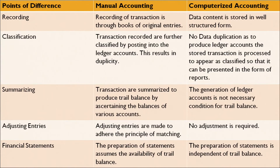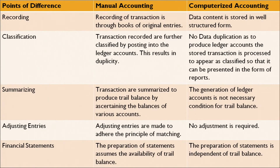Let's now compare how manual records were maintained versus how data is maintained through a computer-aided system. Recording: in the manual process, transactions are recorded through books of original entries; in the computer system, data content is stored in a well-structured form. Classification: in manual accounting, transactions are further classified by posting into ledger accounts, which results in duplicity; in computer-aided systems, no data duplications are done. Summarizing: in a manual process, transactions are summarized to produce a trial balance by ascertaining balances; in a computer-aided system, generation of a ledger account is not necessarily required for preparing the trial balance — so the trial balance can be prepared even without generating the sub-ledger accounts.